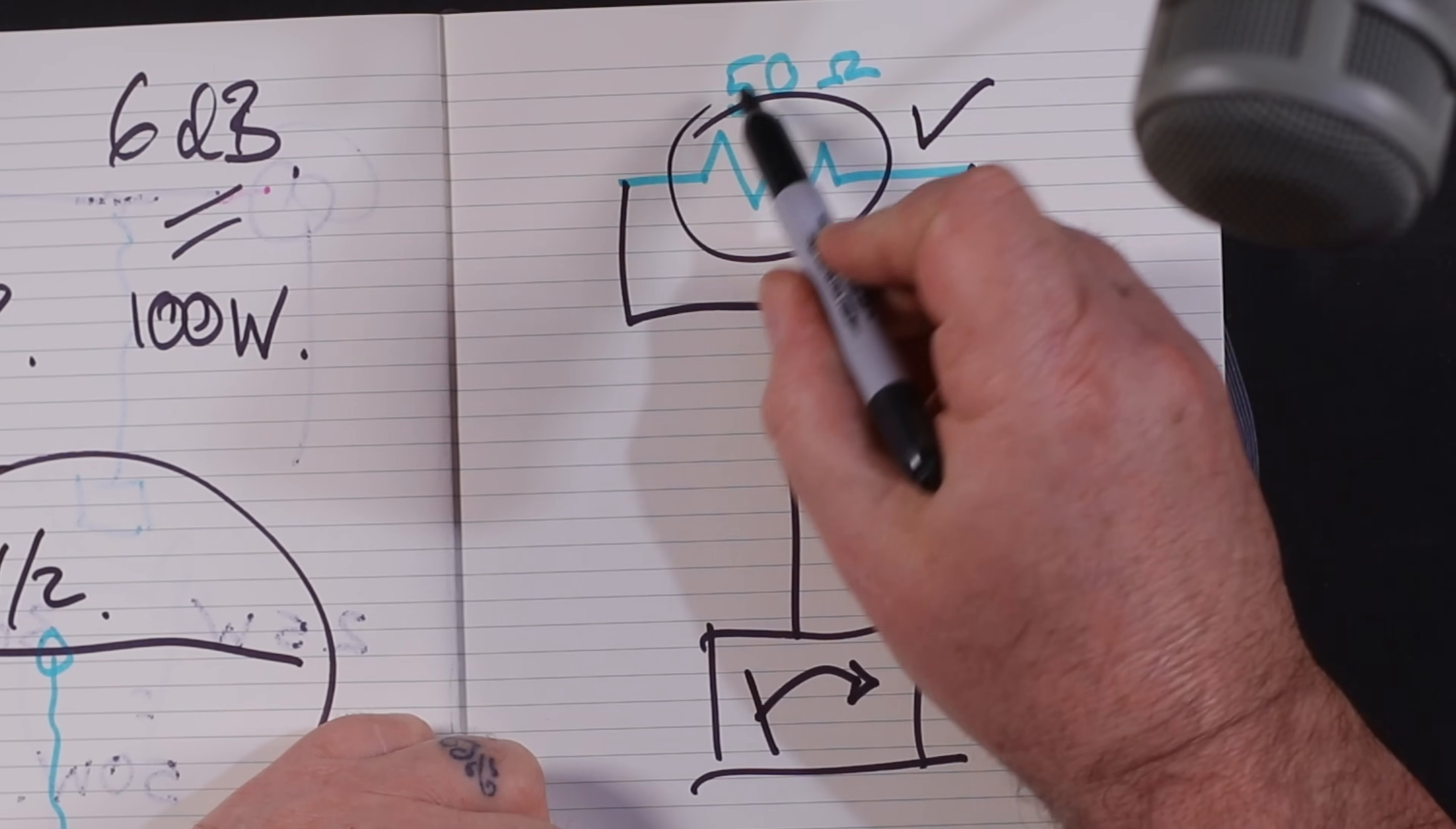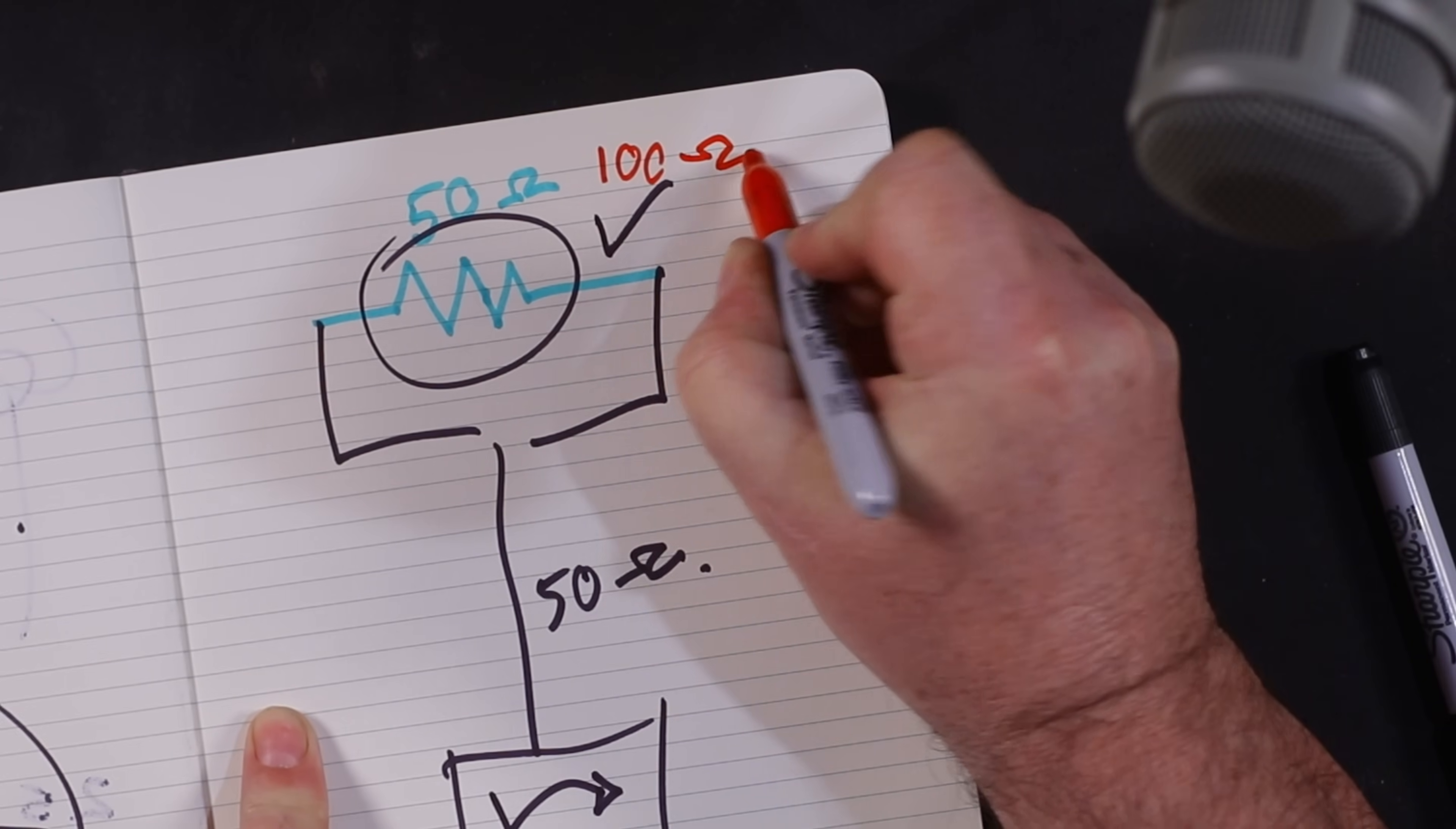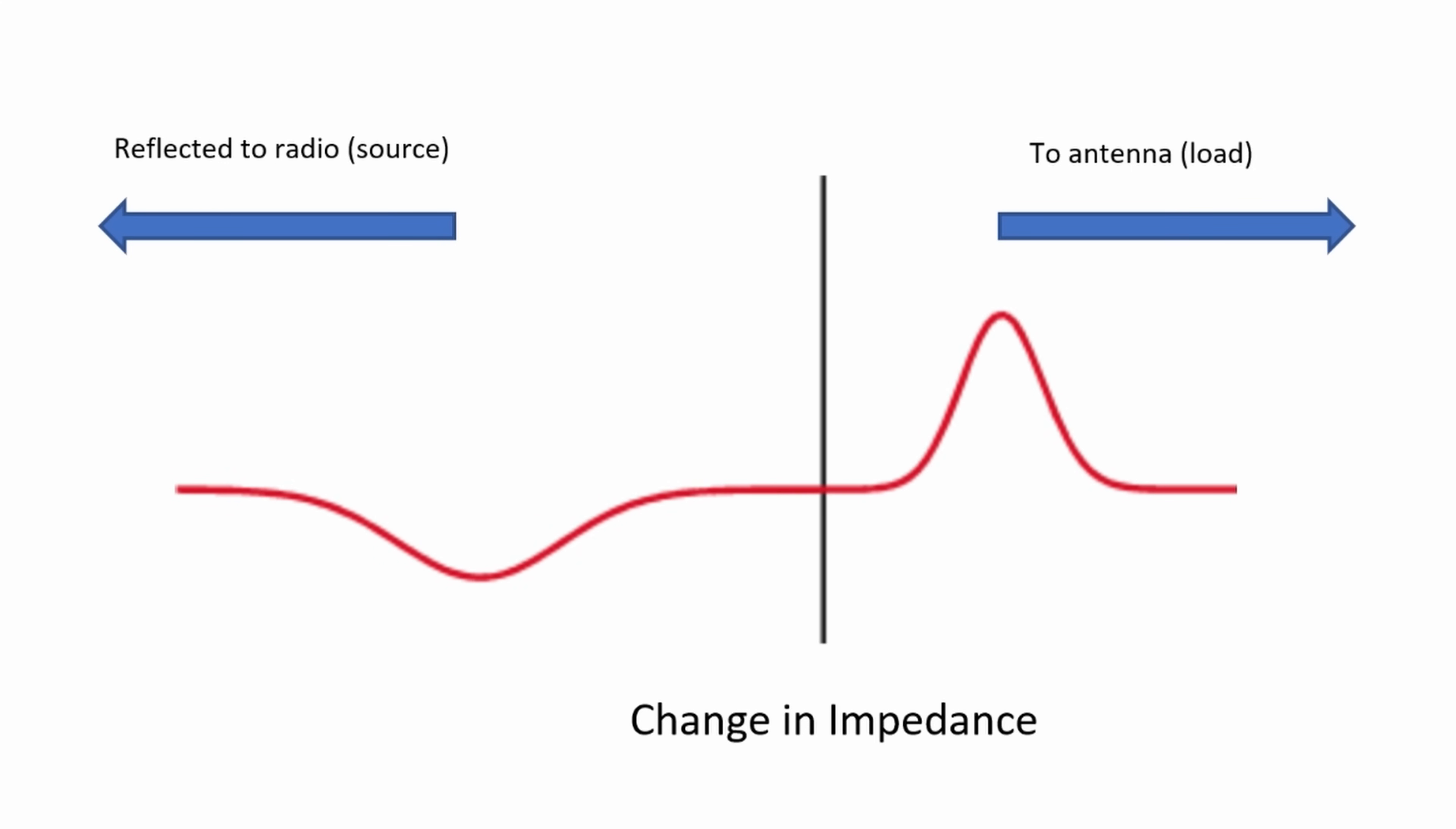Now what happens if it's not a 50 ohm resistor but we put a 100 ohm resistor in place? What happens now? Tom M0RMY sent me a great graphic the other day and you can see as our signal comes along and it hits the wrong antenna, the wrong impedance - some of it is going to bounce back.